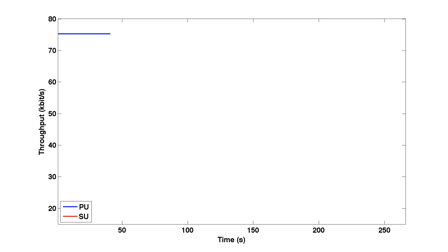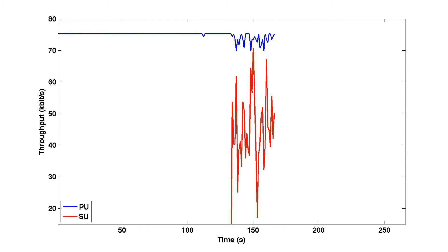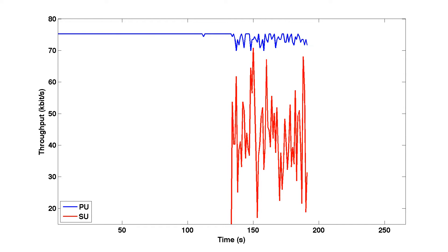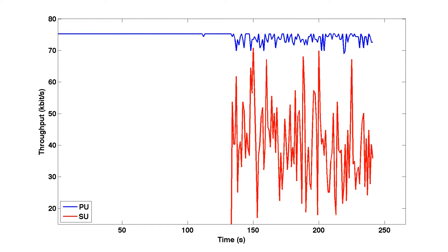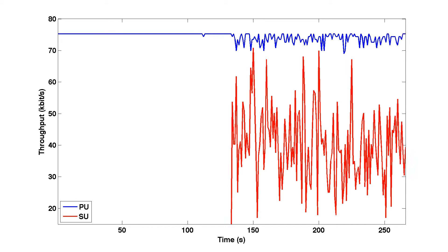This graph shows the throughput of the primary user in time. When the secondary user becomes active, the primary user throughput is only slightly affected. However, the combined throughput is significantly higher.